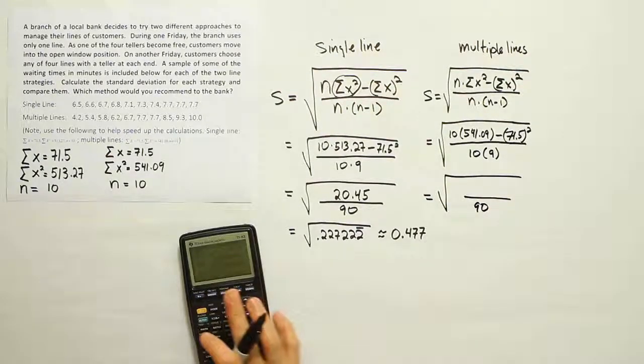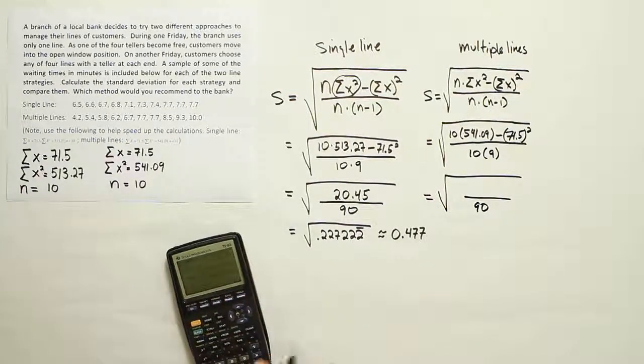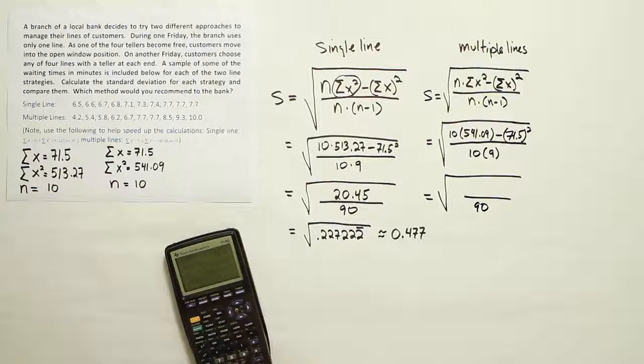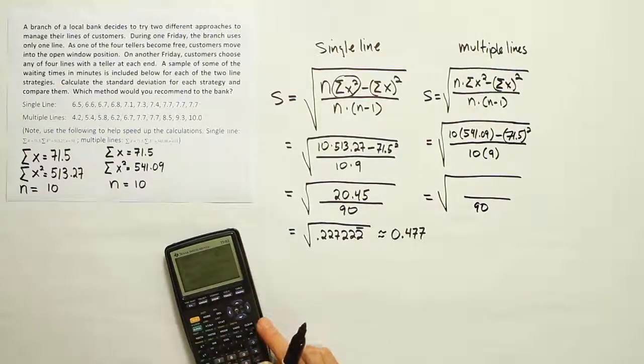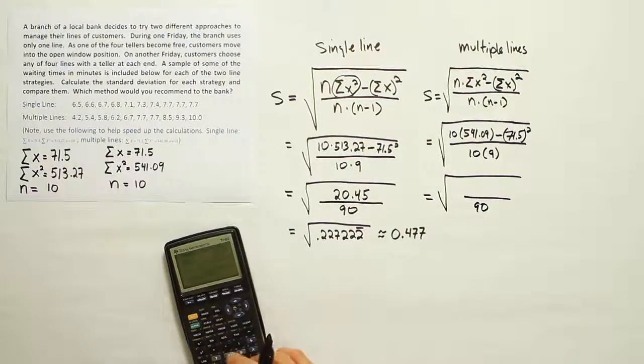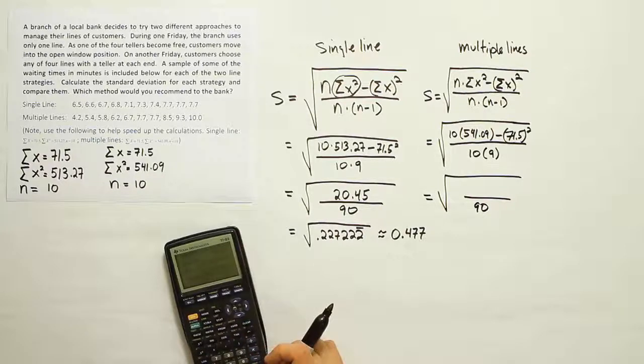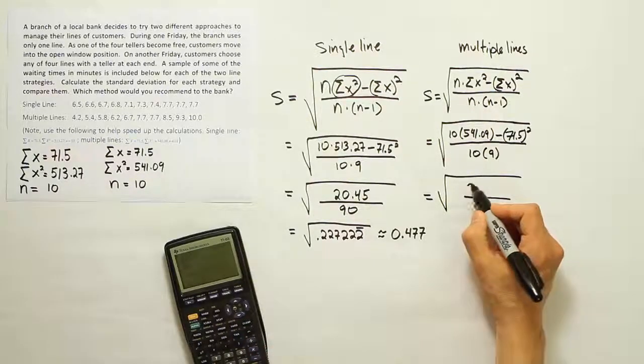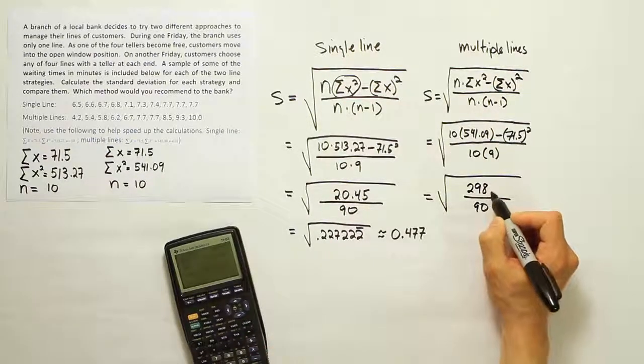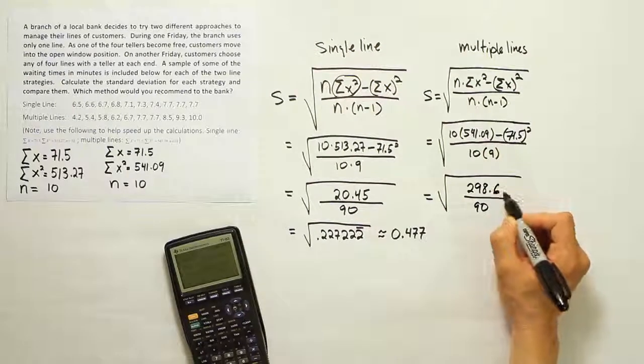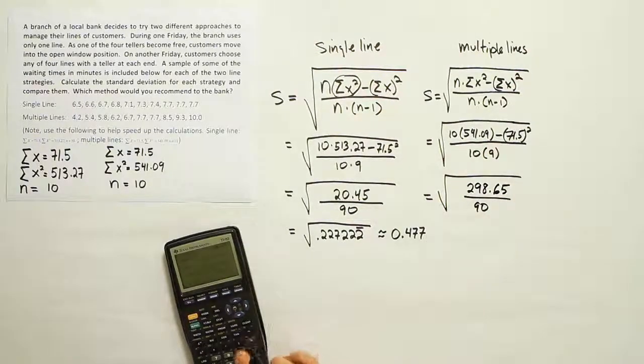And we'll end up with 10 times 541.09. Or in other words, just move the decimal place over one place to multiply by 10. And then 71.5 squared subtracted from that number. And we end up with 298.65. All right, divide that by 90.